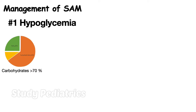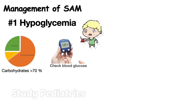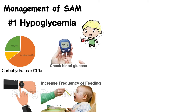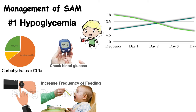Since majority of energy comes from carbohydrates, it is not surprising that these children lack carbohydrates, and on presentation hypoglycemia may be present. Therefore, always check RBS in these patients. To prevent it, feeding these children frequently is very important. We start with increased frequency and low quantity of diet, gradually shifting to low frequency and high quantity, starting with 11 ml per kg every 2 hours and gradually increasing to 20 ml per kg every 4 hours. Feed can be given through katori-spoon or NG feed as the child accepts.